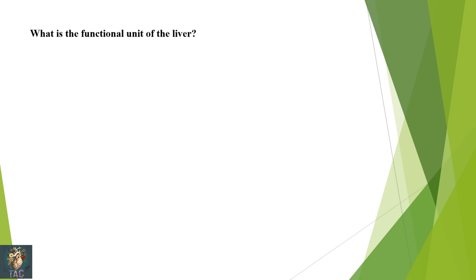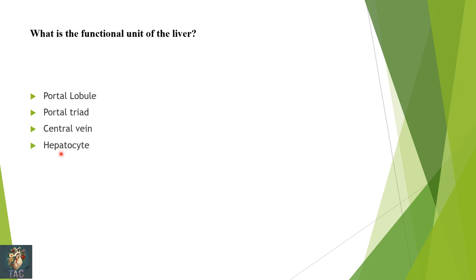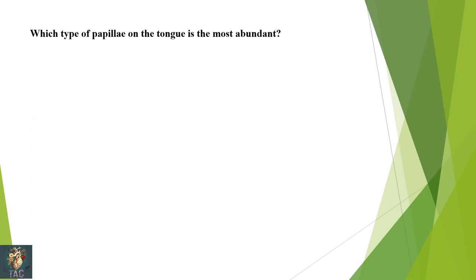Next: what is the functional unit of the liver — portal lobule, portal triad, central vein, hepatocyte, or sinusoid? The functional unit of the liver is the portal lobule. This is the correct option.